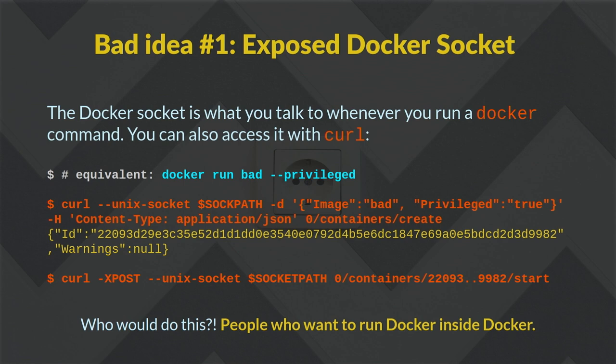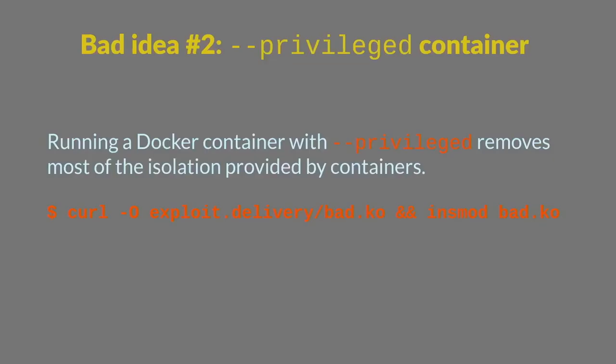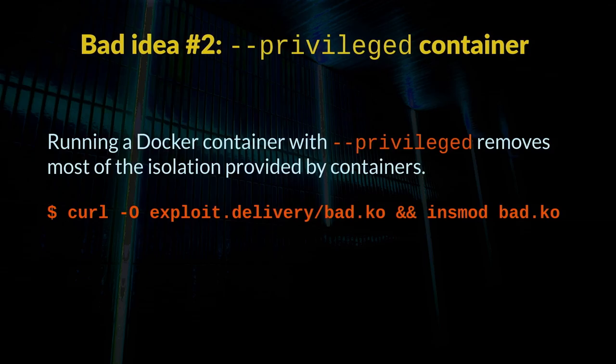People expose the Docker socket into the container so they can run Docker inside of Docker, but because you're still talking to the Docker that's outside your container, when you schedule something you pop out of the container. Speaking of privileged containers — that's bad idea number two. If you run a Docker container with the --privileged flag, you're basically throwing away all isolation features from a security standpoint: no Linux security modules like AppArmor, full capabilities, none of the capability drop stuff. One example is installing a kernel module from your privileged container — obviously game over.